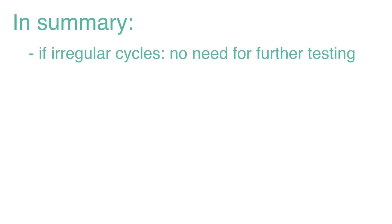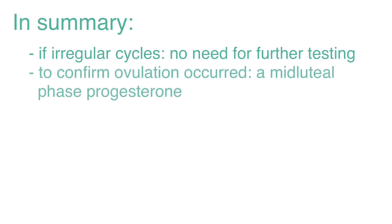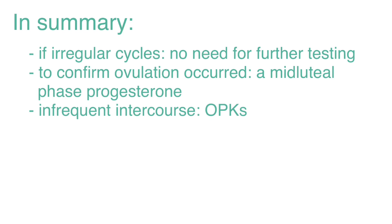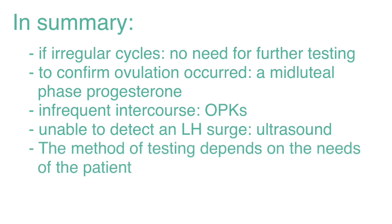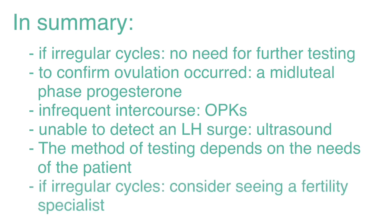In summary, if cycles are irregular, you can assume ovulation dysfunction and there's no need for further testing. When only wanting to confirm if ovulation occurred that cycle, a mid-luteal phase progesterone is useful. When intercourse is infrequent and the woman needs to time intercourse on a specific day, ovulation predictor kits are helpful. If unable to detect an LH surge, ultrasounds can sometimes be helpful. The method of testing really depends on the need of each individual patient. And remember, if cycles are irregular, you can assume ovulation is not occurring and should consider seeing a fertility specialist for assistance.